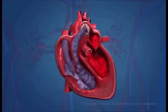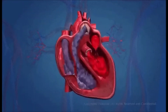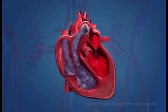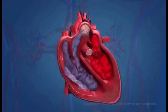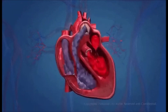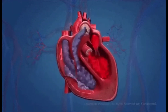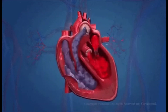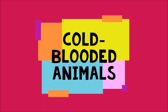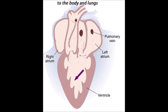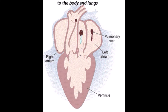In warm-blooded animals, the heart is four-chambered with two auricles and two ventricles. The right and left sides are completely separated to prevent mixing of oxygenated and deoxygenated blood, providing high oxygen supply for energy production and maintaining body temperature. In cold-blooded animals, the heart is three-chambered with two auricles and one ventricle, so oxygenated and deoxygenated blood gets mixed, providing lesser oxygen and producing lesser energy.